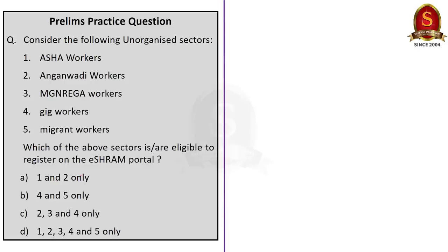The second question is a quiz question for you. Consider the following unorganized sectors: Asha workers, Anganwadi workers, MNREGA workers, Gig workers, Migrant workers. Which of the above sectors are eligible to register on the eShram portal? Think carefully, attempt the question and post your answer in the comment section.